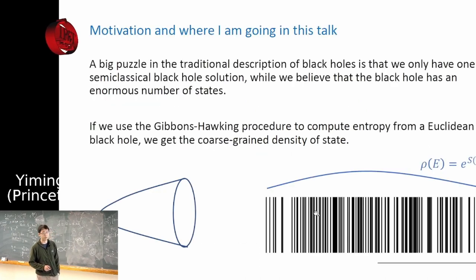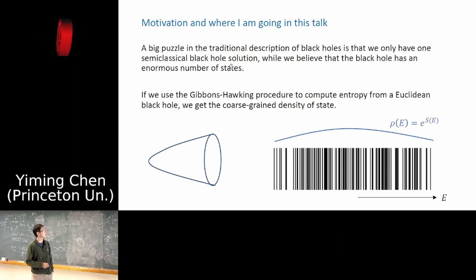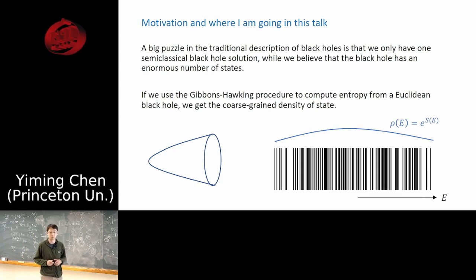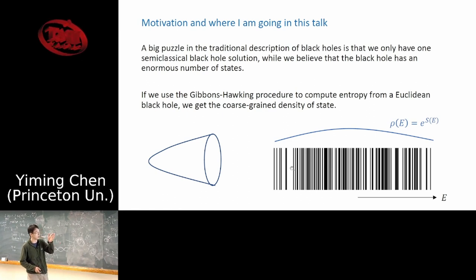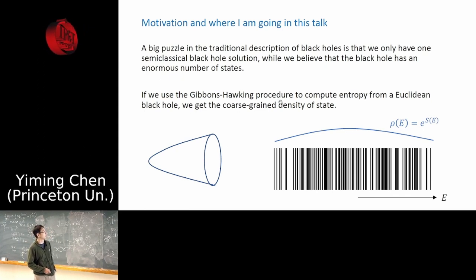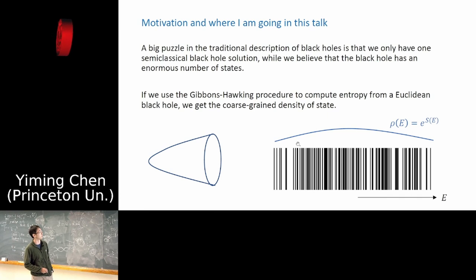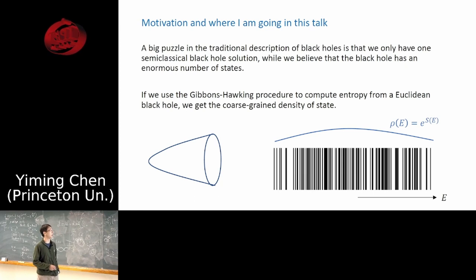Let me start with some motivation. A big puzzle in our traditional description of black holes is that we only have one black hole solution, while we believe that the black hole in quantum mechanical theory is really describing an enormous amount of states. Schematically, all the microstates of the black hole are individual eigenvalues of the system, but if we use the Gibbons-Hawking procedure and the Euclidean black hole to compute the entropy, we just get the coarse-grained density of states — a smooth curve which doesn't reflect the underlying discreteness of the spectrum.